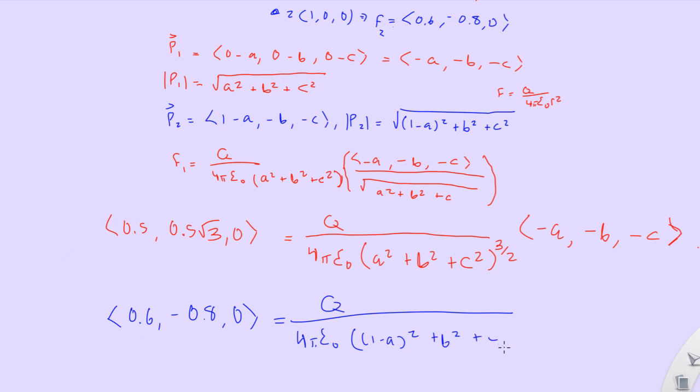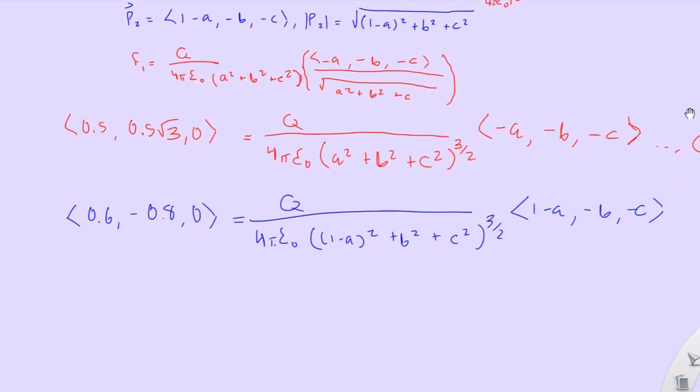This will be the 3 halves. And then we have the same thing. A vector like this. Negative B, negative C. Okay, so now you have two equations that we can use to solve for this thing. But wait, we have three variables.